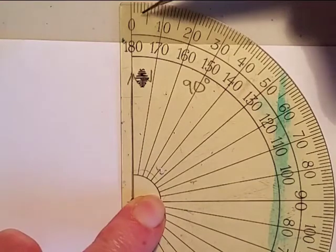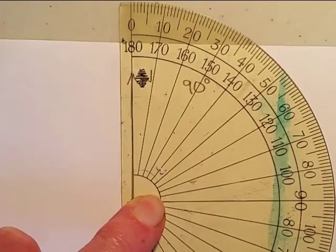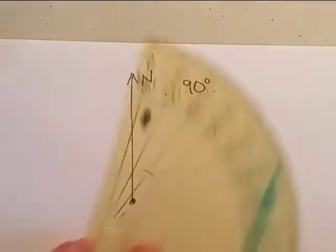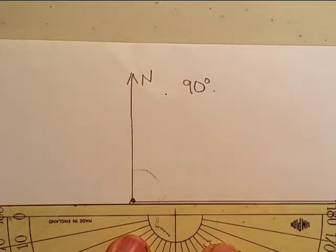So we're looking for 90 degrees around the protractor: 0, 10, 20, 30, 40, 50, 70, 80, 90. We can mark the point there and we're just drawing a line out to there.